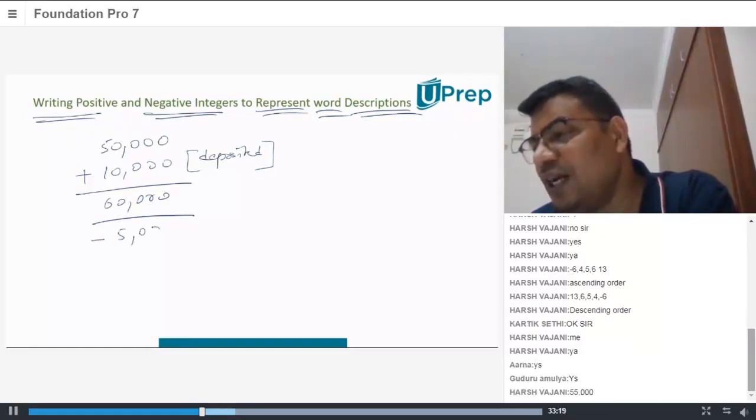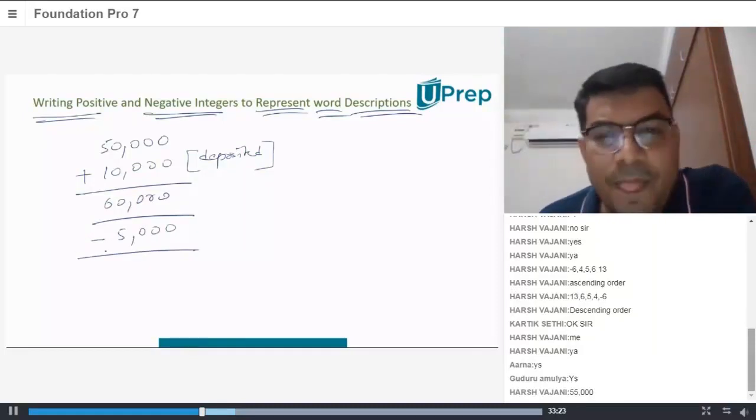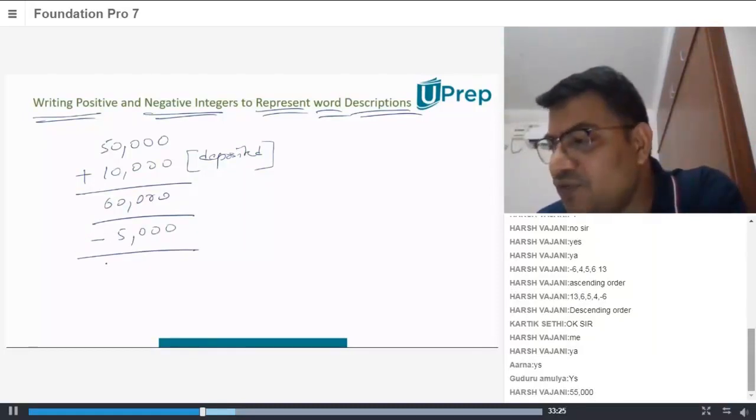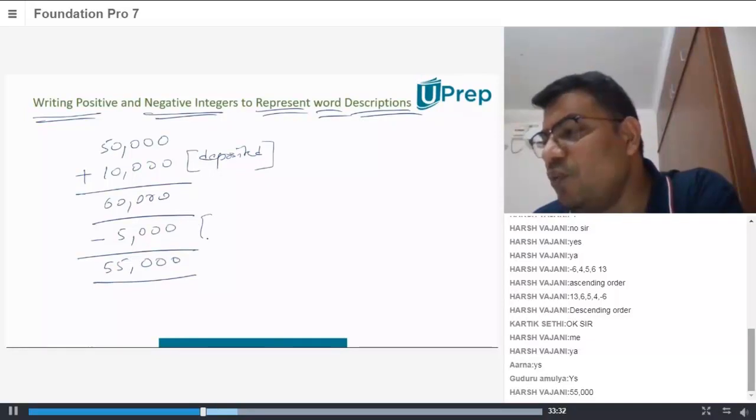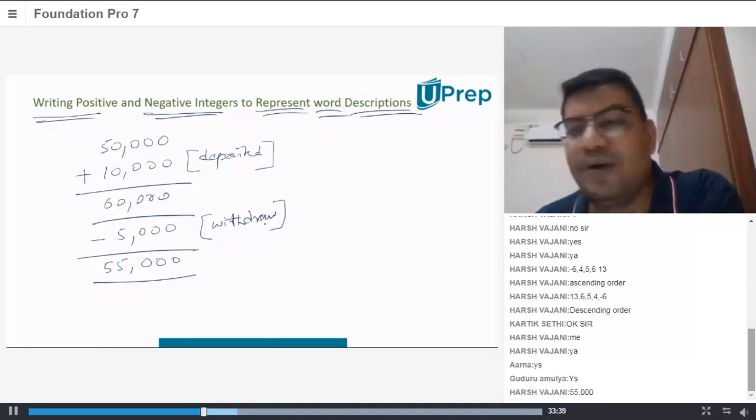Now she is withdrawing $5,000. So, what happens? If you see her bank statement, what it will show is, there will be negative. So, $60,000 minus $5,000. So, that will be $55,000. So, you can see the representation. So, whenever you withdraw, when you are withdrawing, the mathematical notation of withdrawal will be negative number.